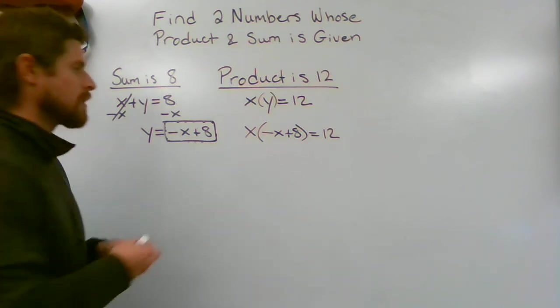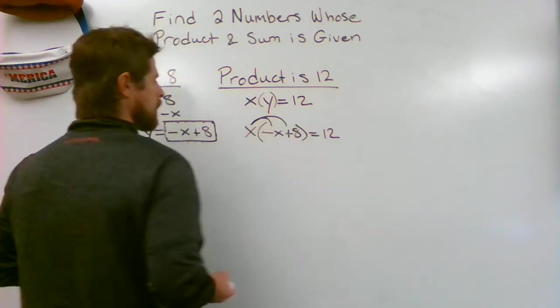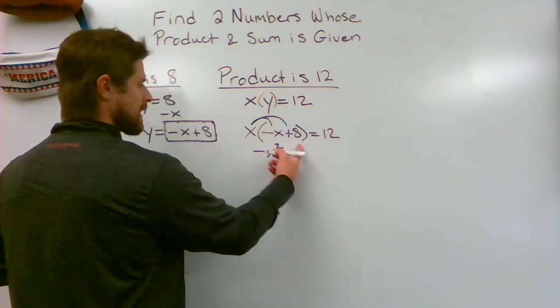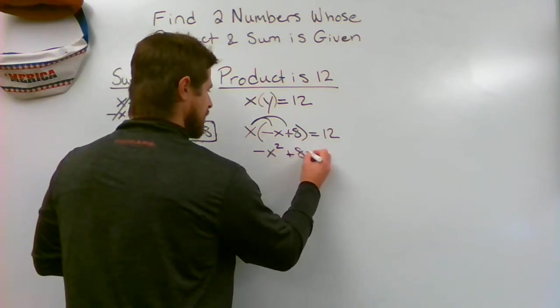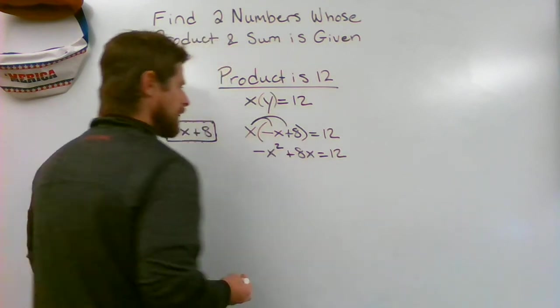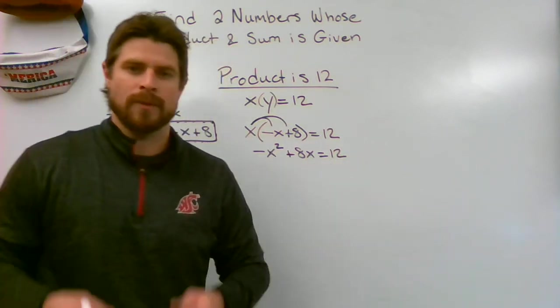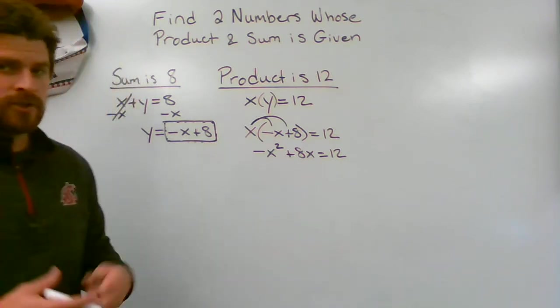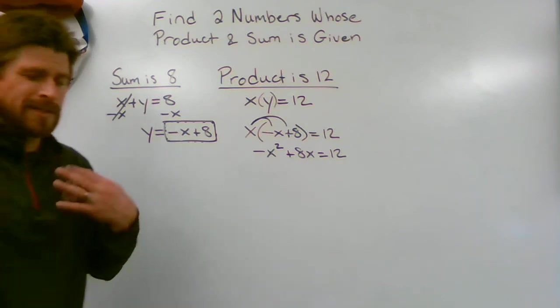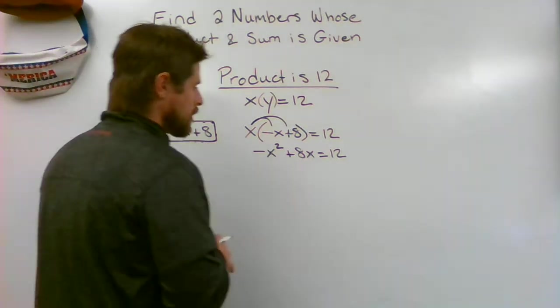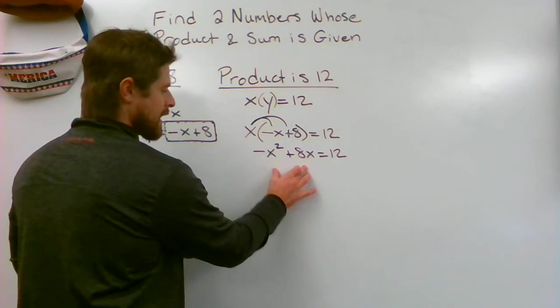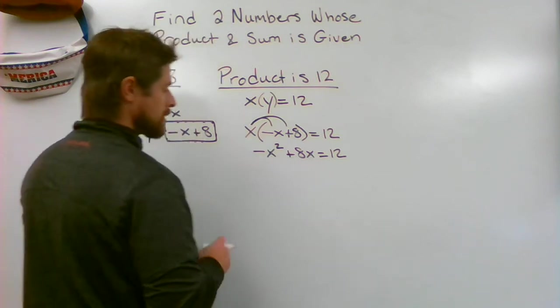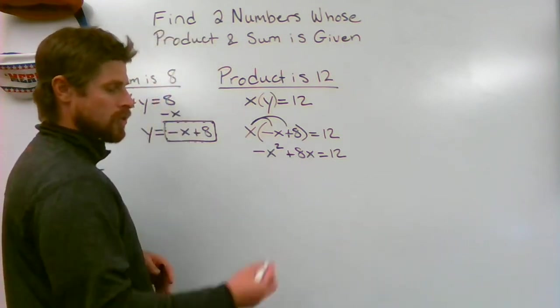I want to go ahead and simplify this, start to solve. So I'm going to distribute. I'm going to get X times negative X which is negative X squared, X times 8 which is 8X, and it's still equal to 12. Now we can't have it equal to 12, what we need it equal to is zero. Now some teachers might just jump through this step, I really want to show you what you're technically doing here. What you're going to do is you're going to eliminate both of those terms from the left side so that on the left side you're left with a zero. Remember we want this all to be equal to zero before we use the quadratic formula.